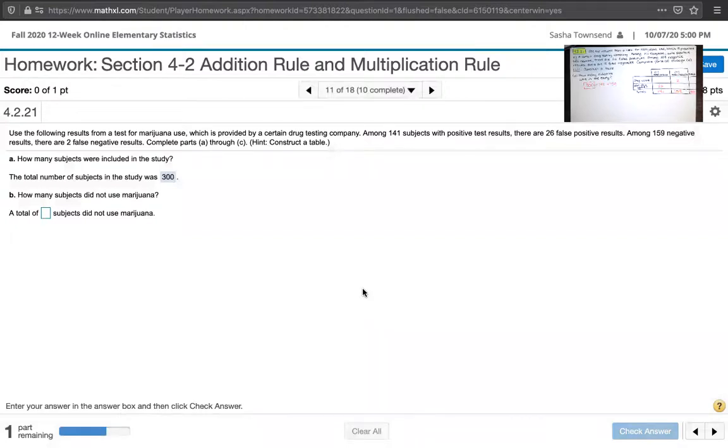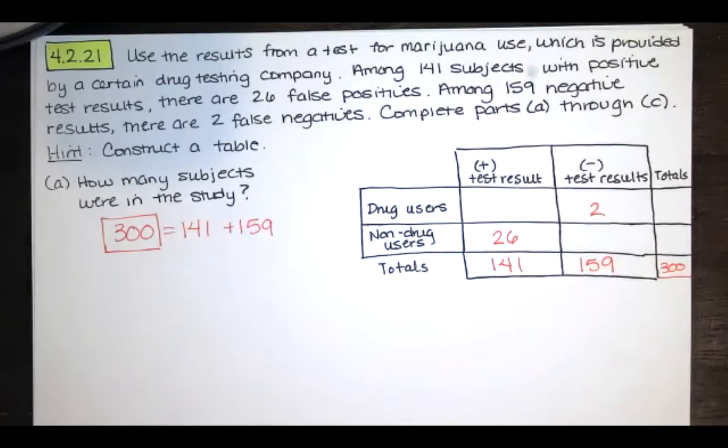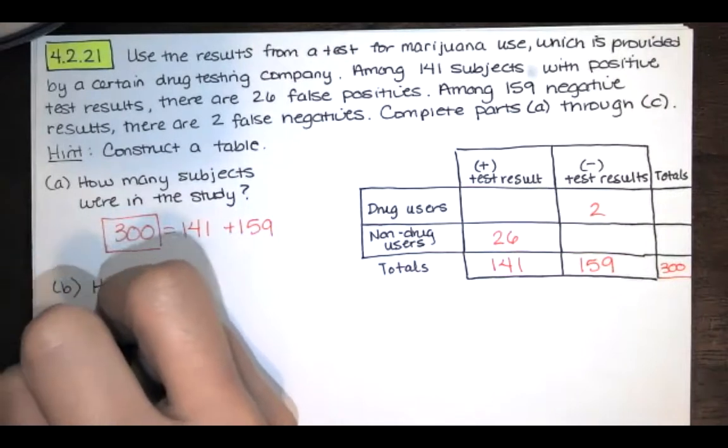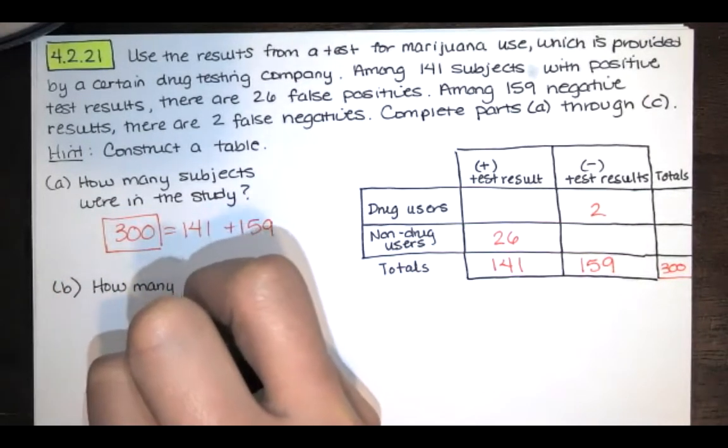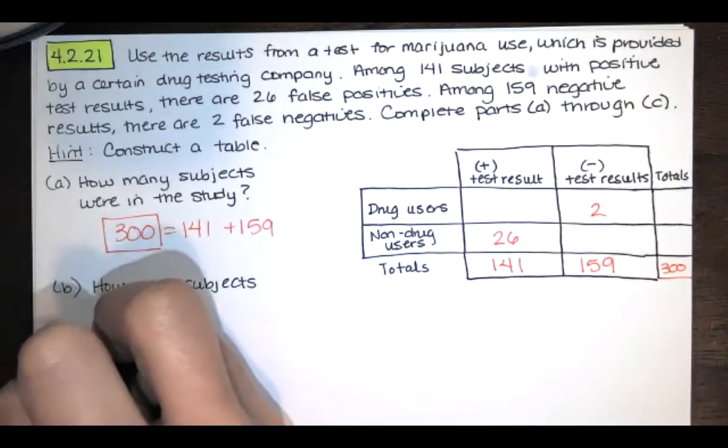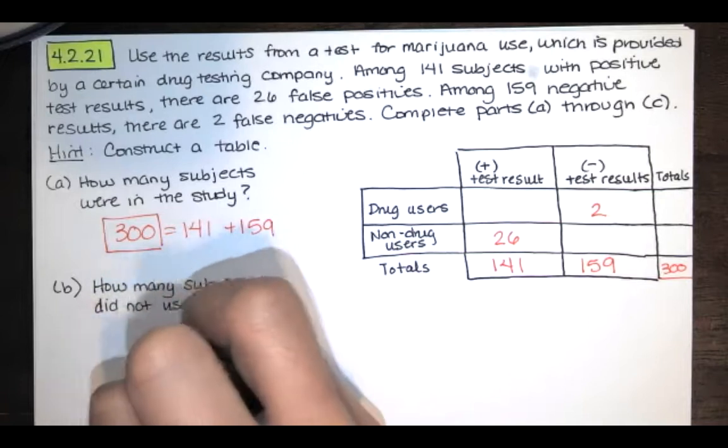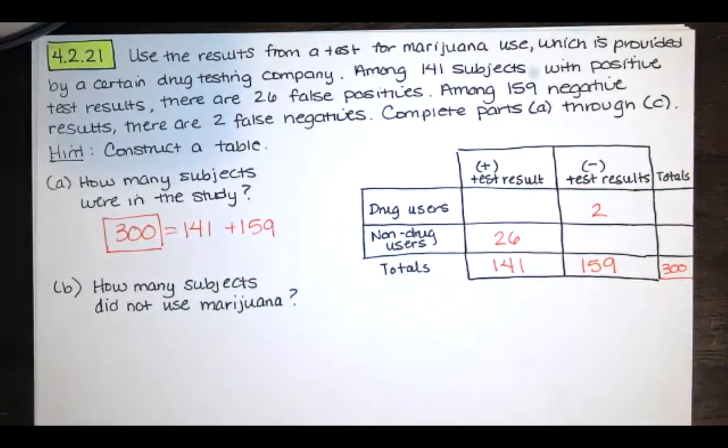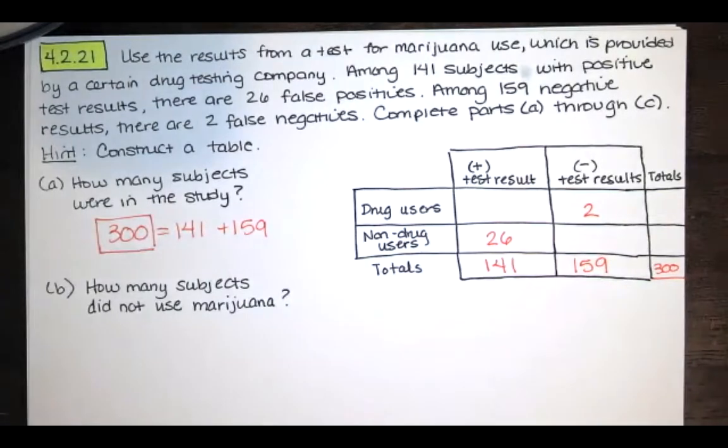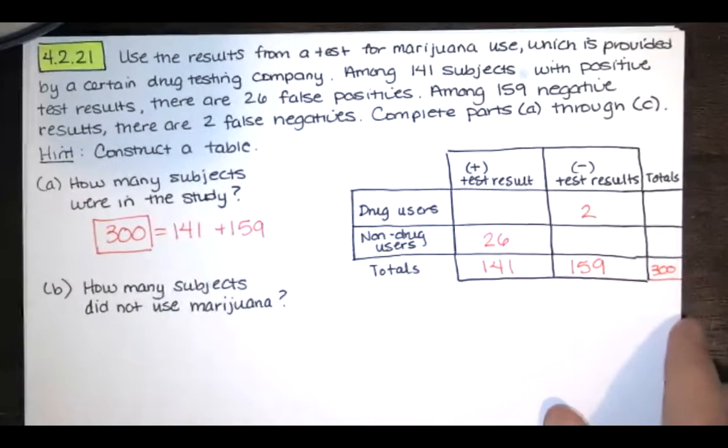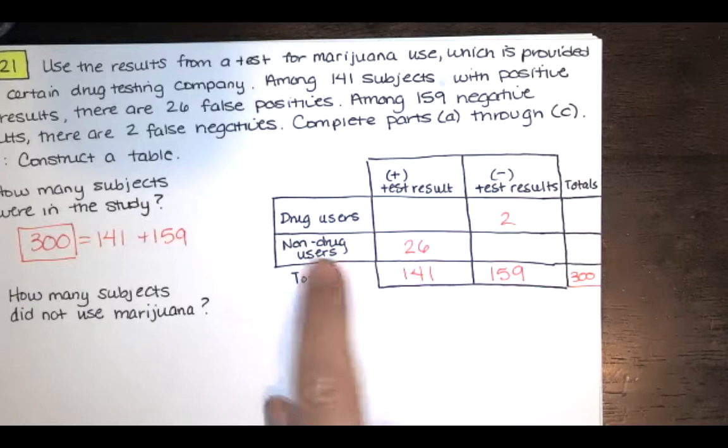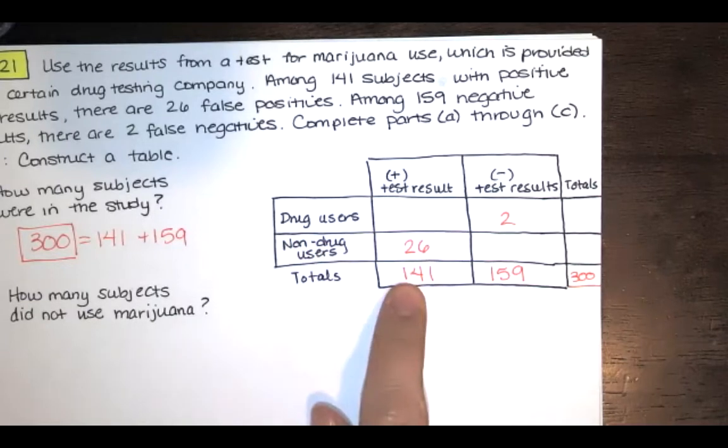Then the question says, how many subjects did not use marijuana? In order to do this, I'm going to show you my paper again. How many subjects did not use marijuana? Or in other words, how many non-drug users do we have? The way we can find the number of non-drug users is to just finish filling in this table. So I know that I had 26 non-drug users or people that did not use marijuana in the positive test results group.